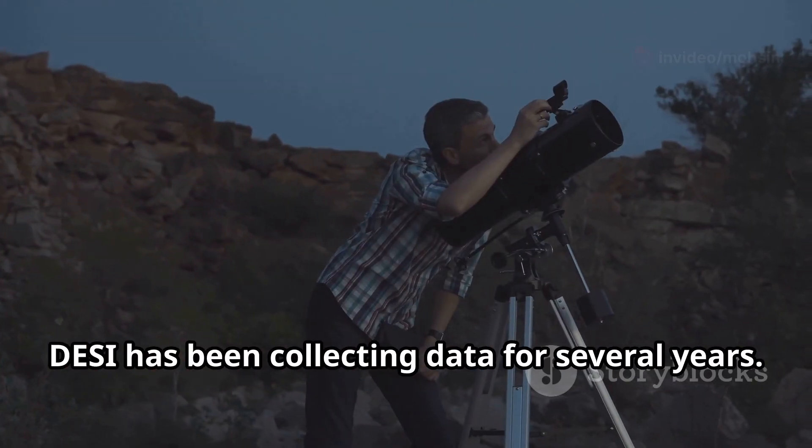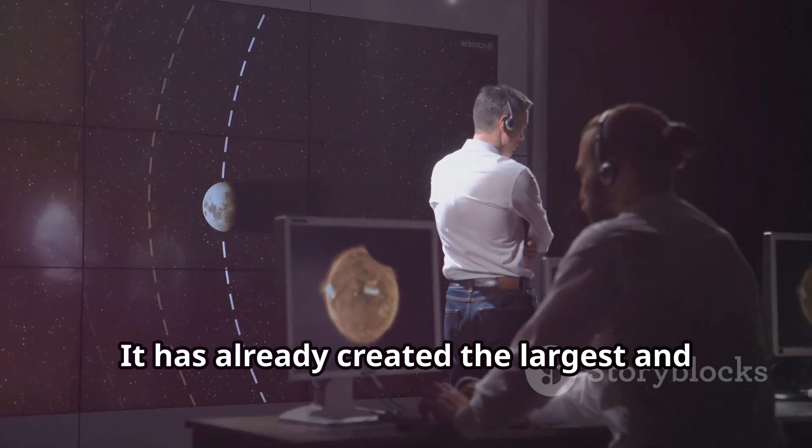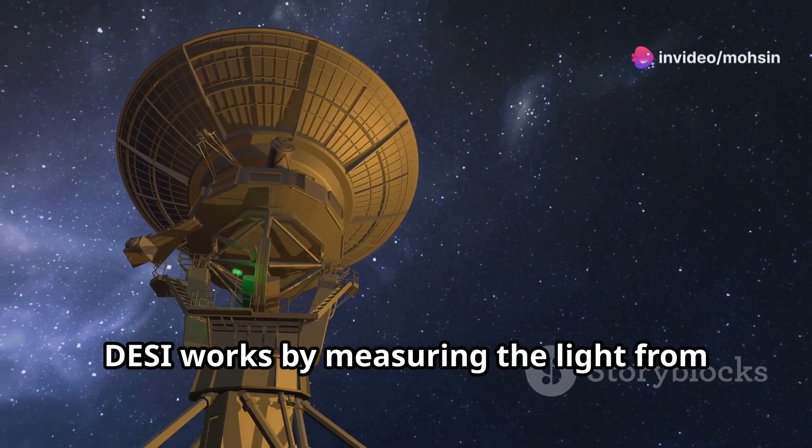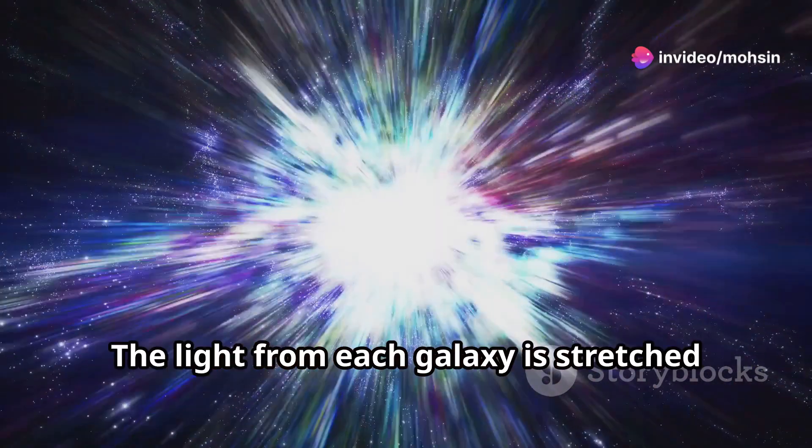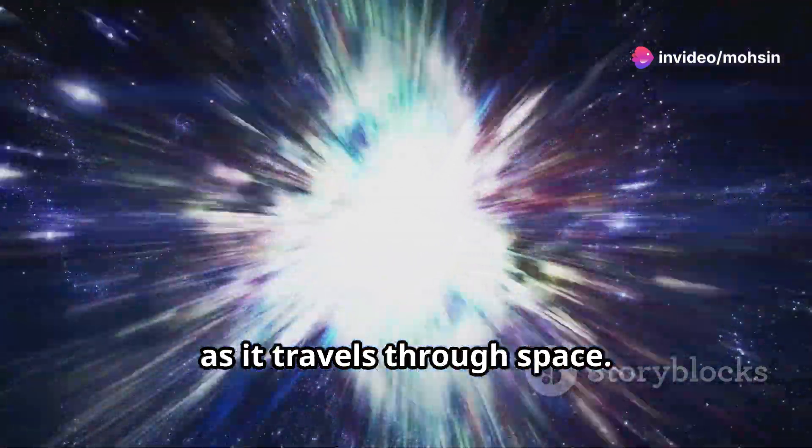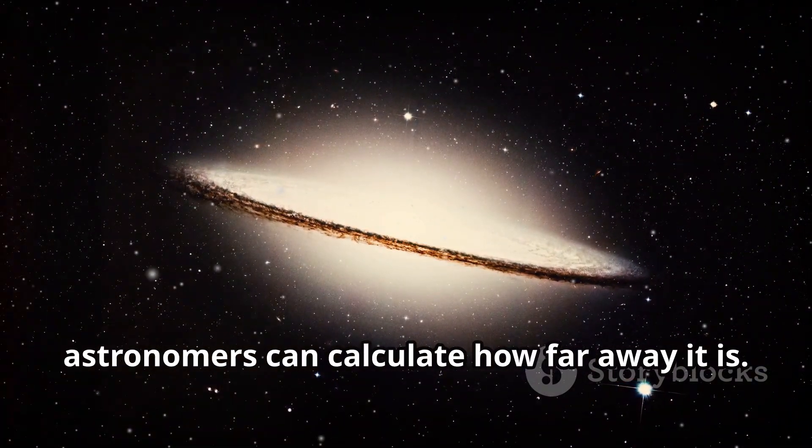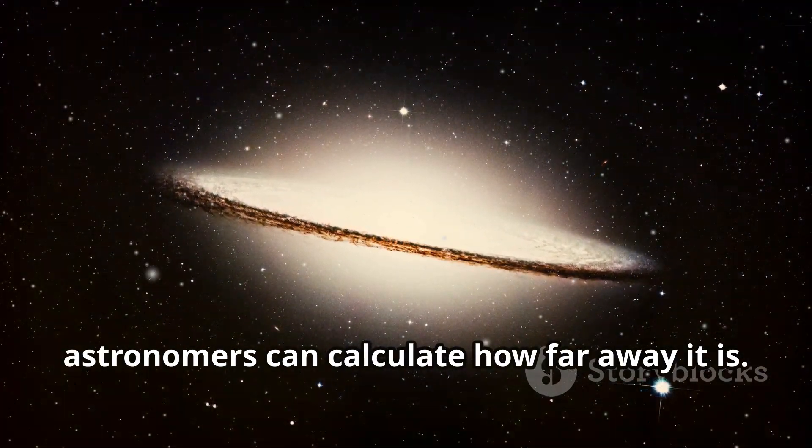DESI has been collecting data for several years. It has already created the largest and most detailed map of the universe ever made. DESI works by measuring the light from millions of galaxies. The light from each galaxy is stretched as it travels through space. This is called redshift. By measuring the redshift of a galaxy, astronomers can calculate how far away it is.